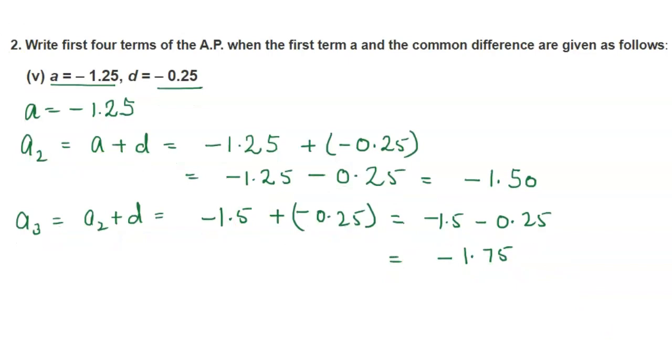Now the fourth term: fourth term equals A3 plus common difference, equals minus 1.75 minus 0.25, equals minus 2.